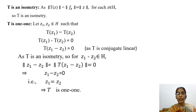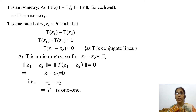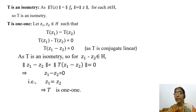Now we show that T is an isometry. The norm of T of Z equals the norm of F_Z by definition of T. And by definition of F_Z, the norm of F_Z equals the norm of Z, for each Z in H. That means T preserves norms, so T is an isometry.